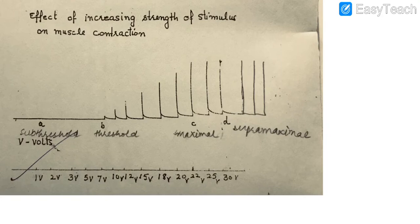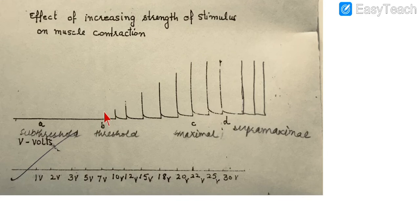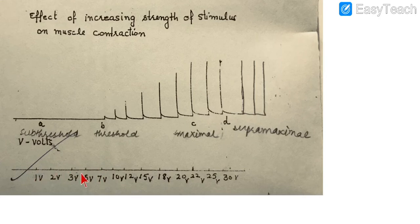The seven-volt stimulus — below seven volt all stimuli are sub-threshold, and seven volt itself is called the threshold stimulus. The examiner might ask you to define threshold stimulus. The answer should be: this is the minimum strength of the stimulus which, when applied, will produce the action potential and will ultimately result in the contraction of the muscle.